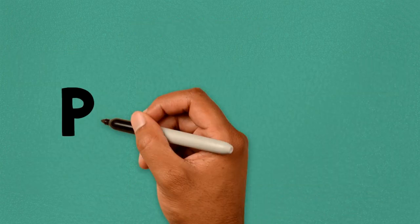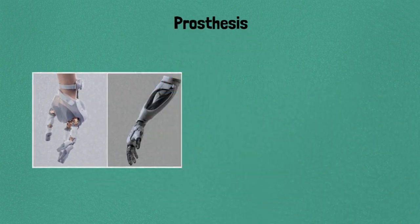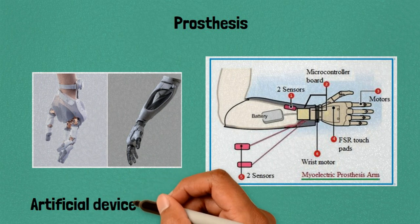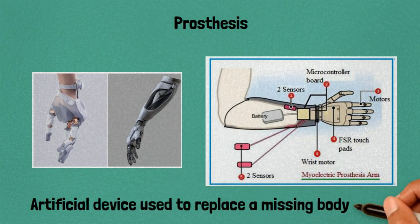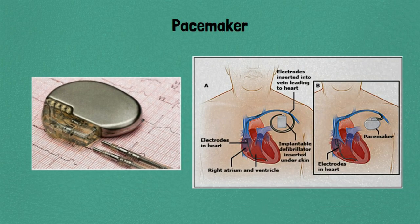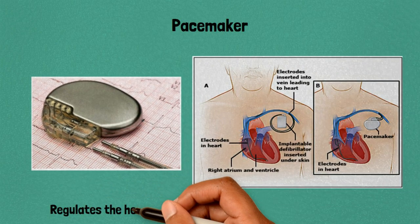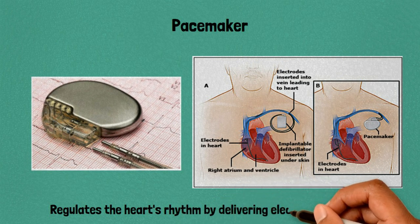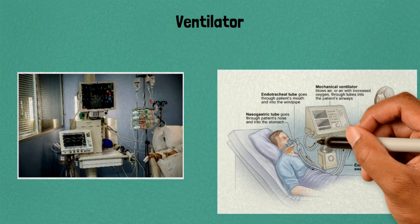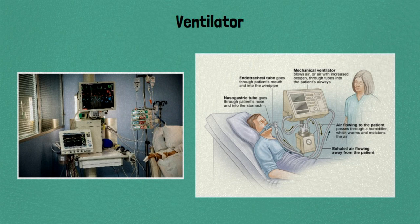Thirteen: prosthesis, an artificial device used to replace a missing body part. Fourteen: pacemaker, regulates the heart's rhythm by delivering electrical impulses. Fifteen: ventilator, assists with breathing for patients who have difficulty breathing on their own.